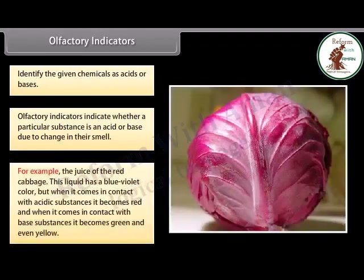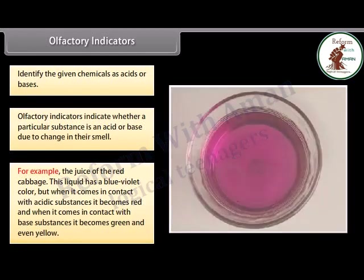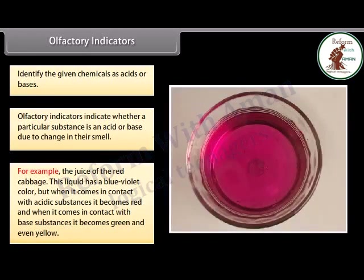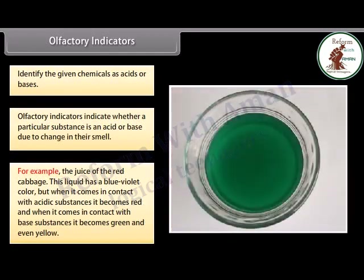An olfactory indicator works on the principle that when an acid or base is added to a substance, its odor cannot be detected. For example, the juice of the red cabbage: this liquid has a blue-violet color, but when it comes in contact with acidic substances it becomes red, and when it comes in contact with base substances it becomes green and even yellow.